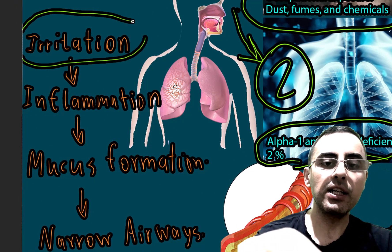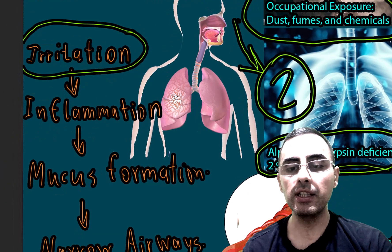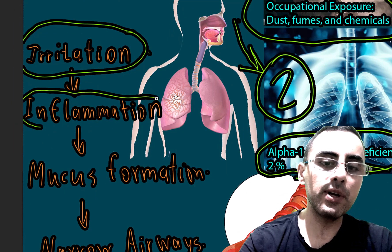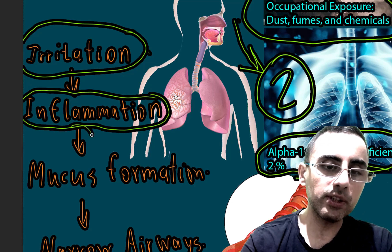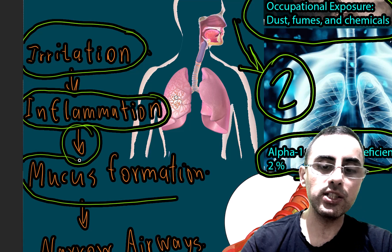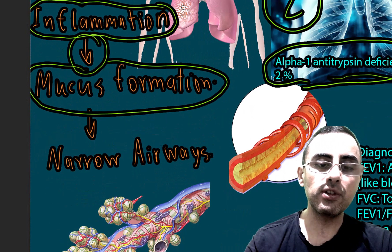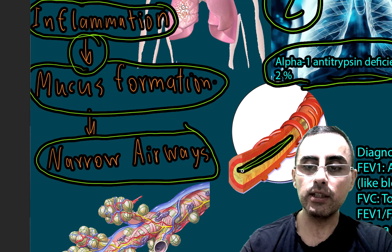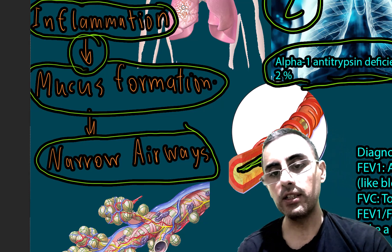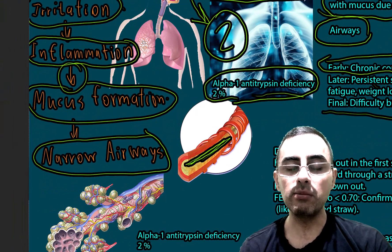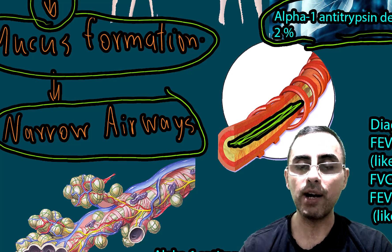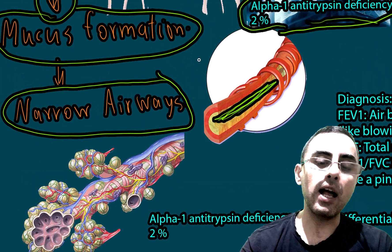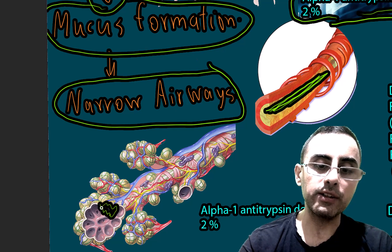Now let's discuss how COPD develops. First, there is irritation of airways from dust or smoking, which causes inflammation. Inflammation causes mucus production, and mucus formation leads to chronic cough. Eventually this mucus causes narrowed airways and obstruction — that's why it is called chronic obstructive pulmonary disease. Additionally, alveoli are damaged, which causes shortness of breath.